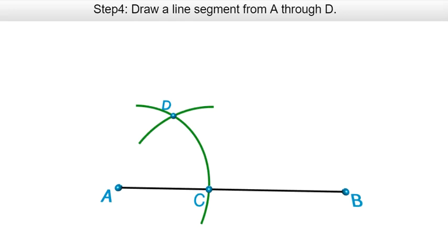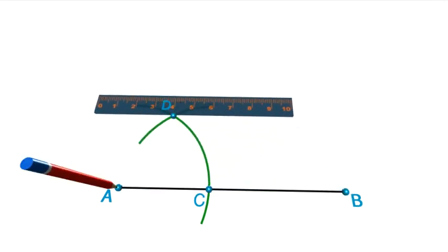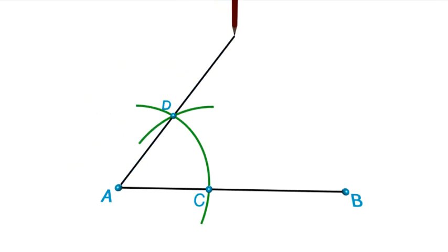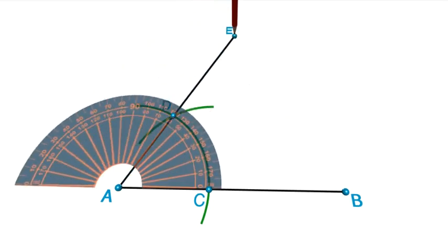So line segment AB and this line from A through D is going to form an angle of 60 degrees. So a line from A through D, and at the top there, I'm going to call that point E. And so angle BAE is equal to 60 degrees.